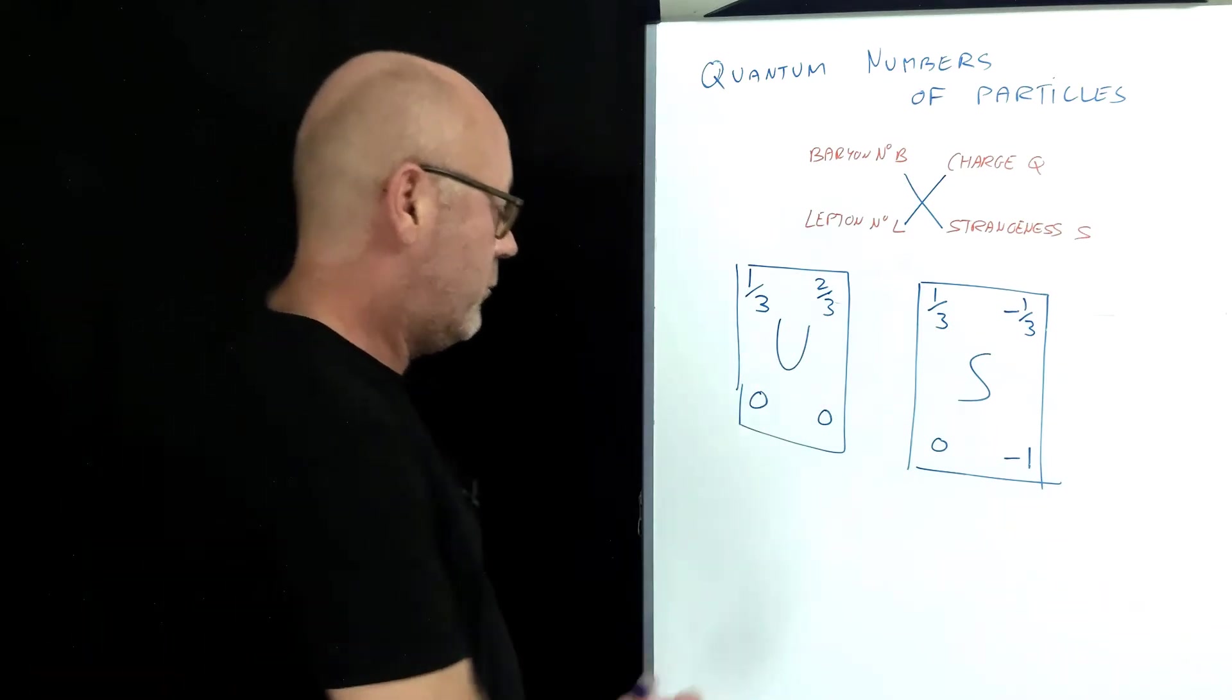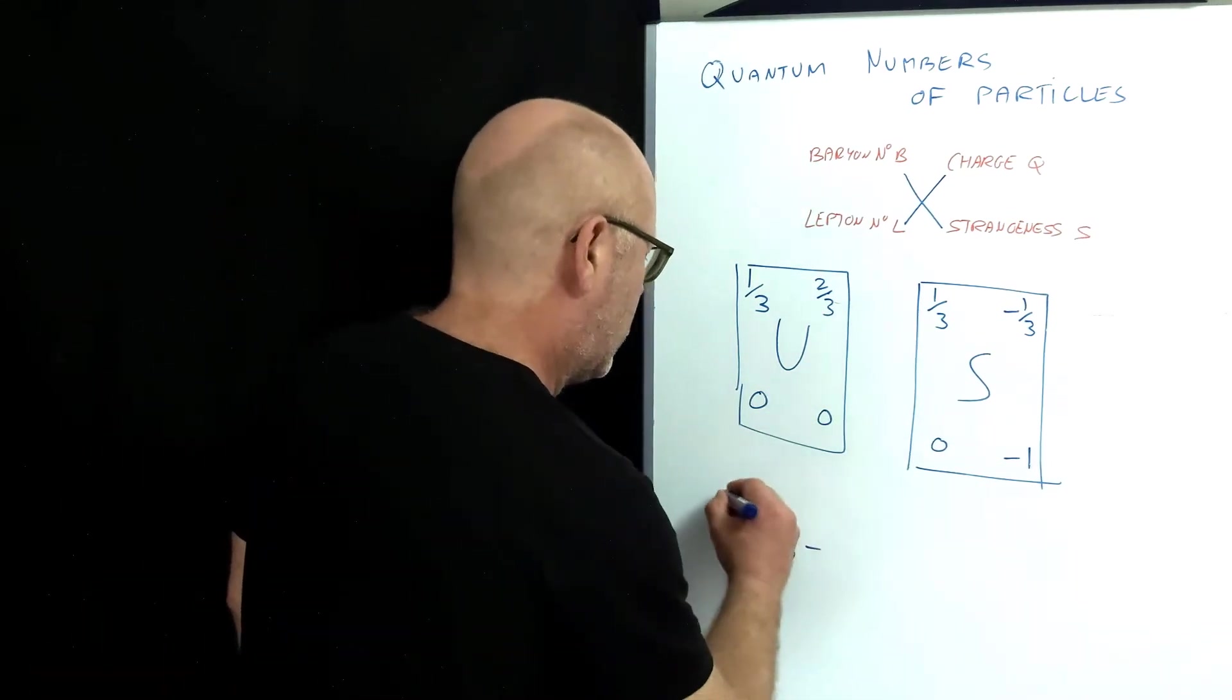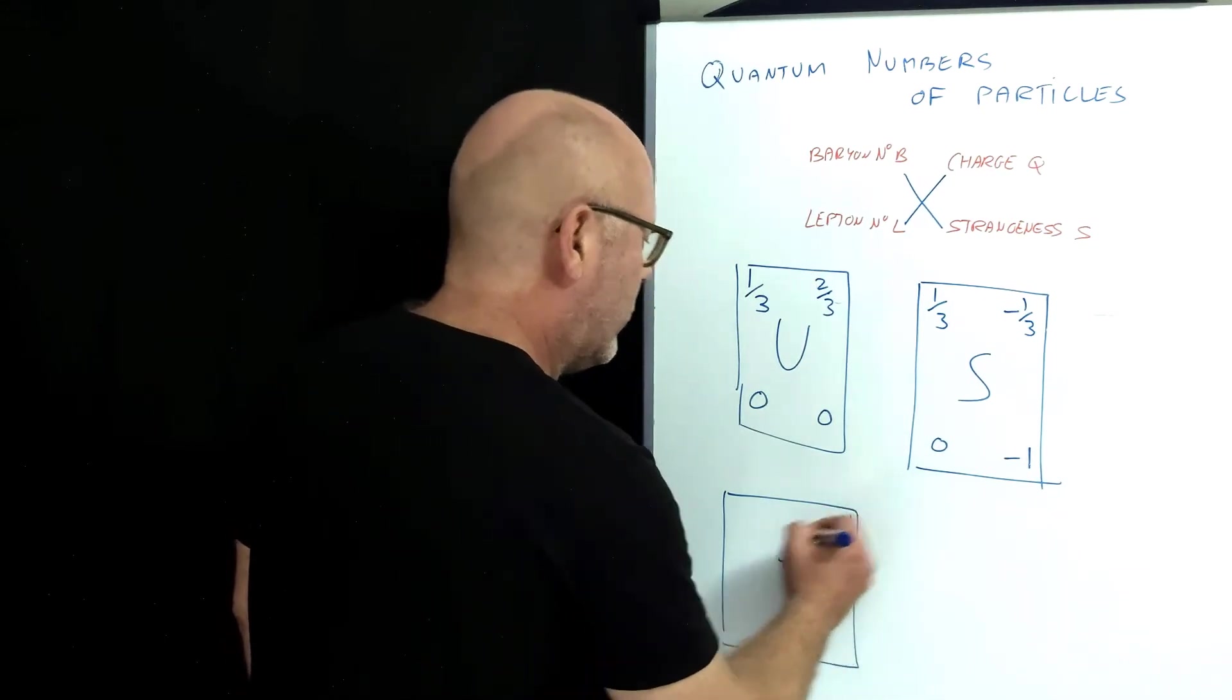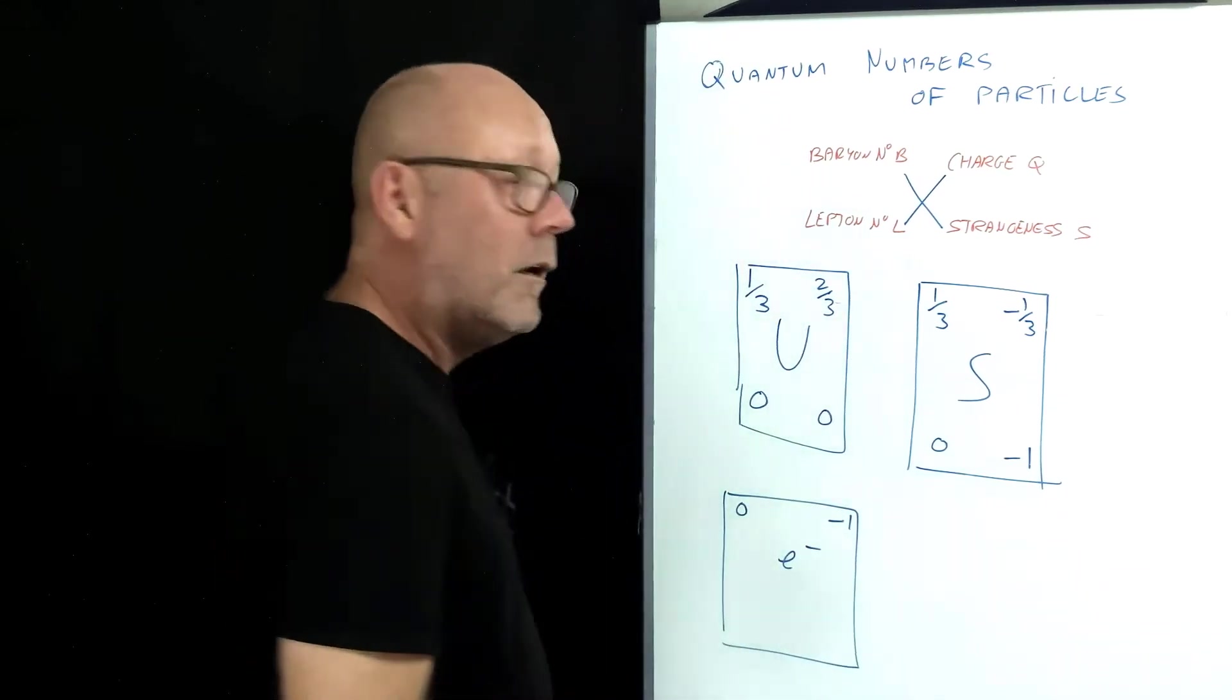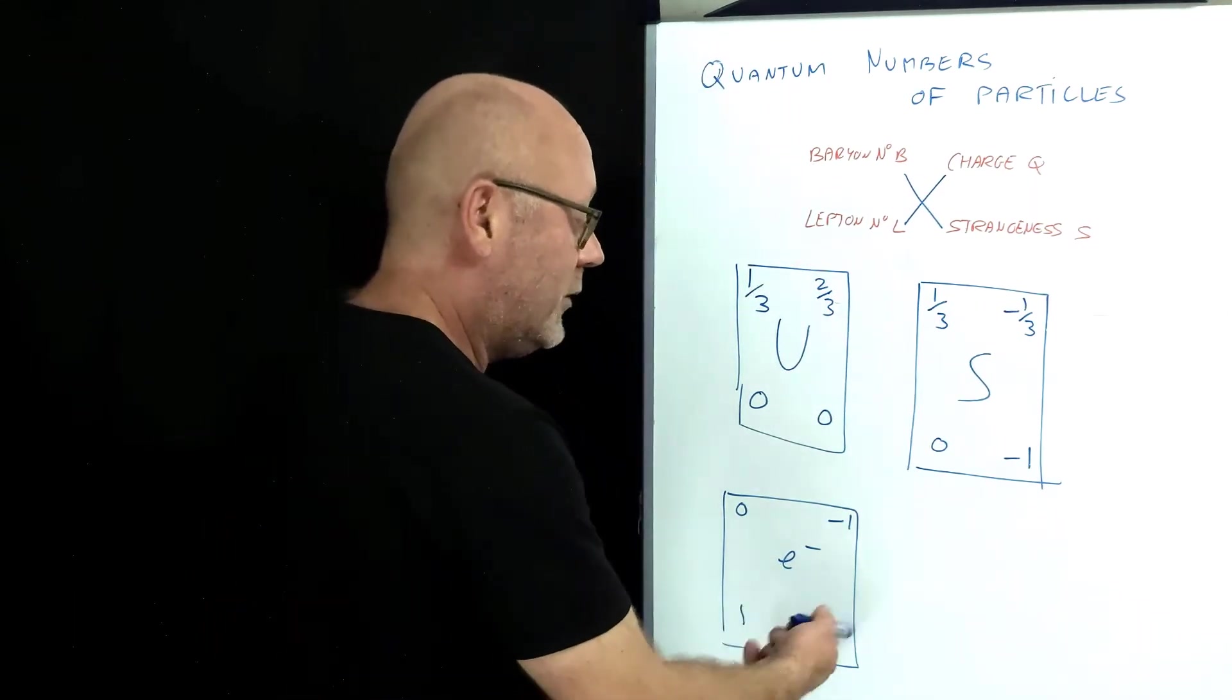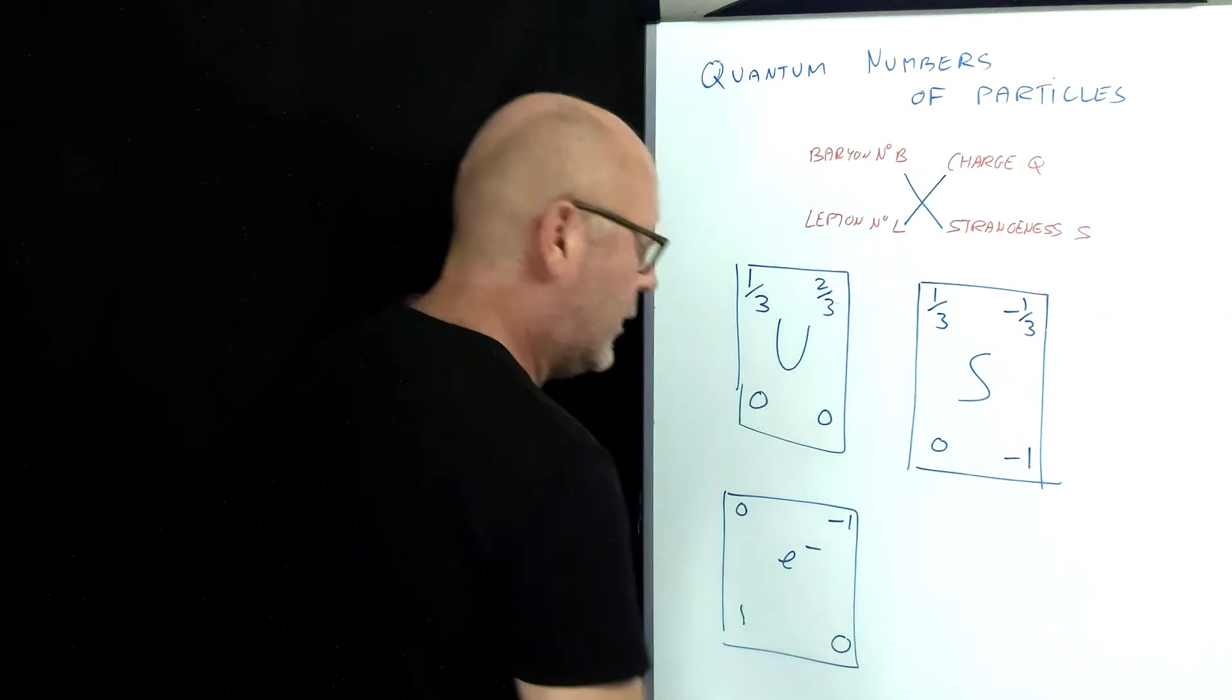Let's consider now the electron. An electron has got a charge of minus one, but it's not a baryon. On the other hand, it is a lepton, so the lepton number is one. It's not a strange quark, so it doesn't have any strangeness.